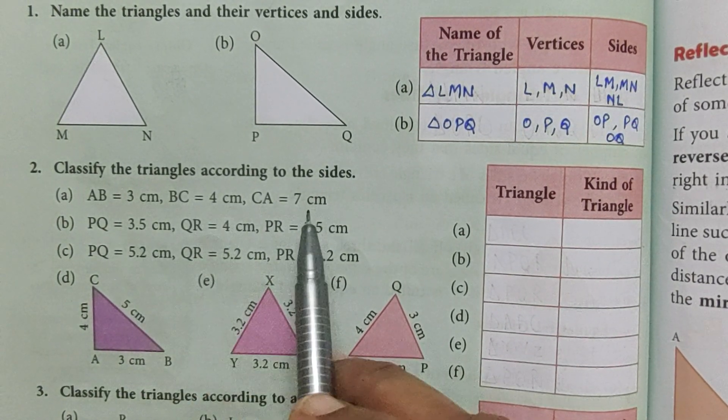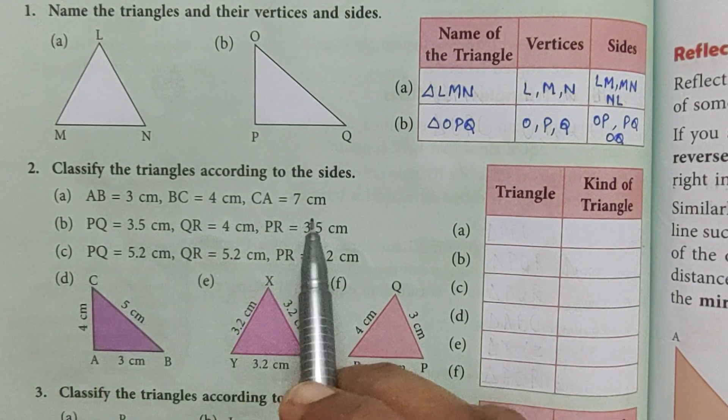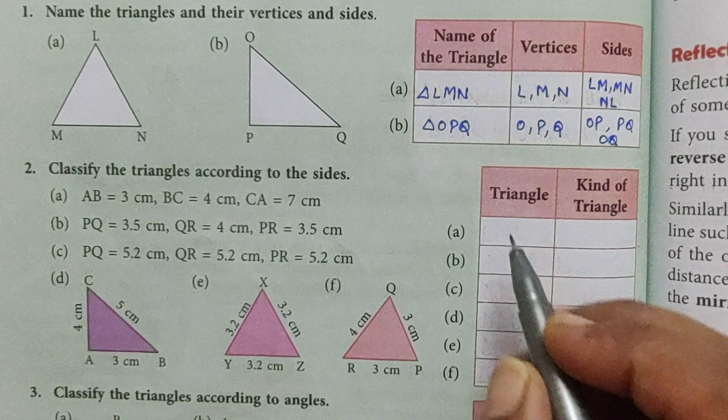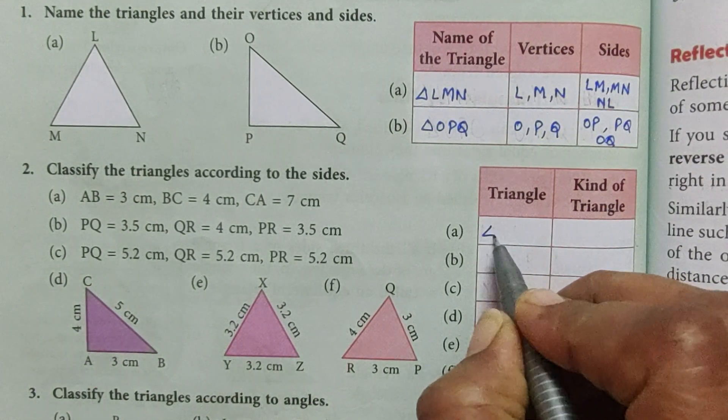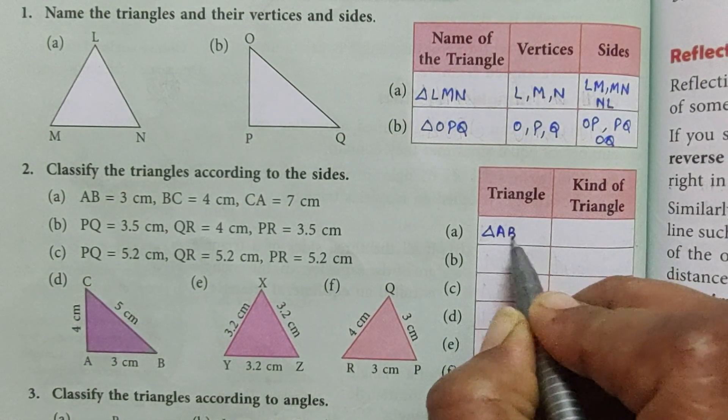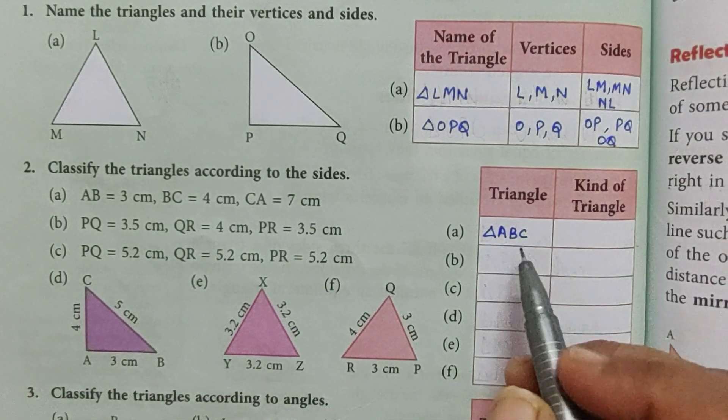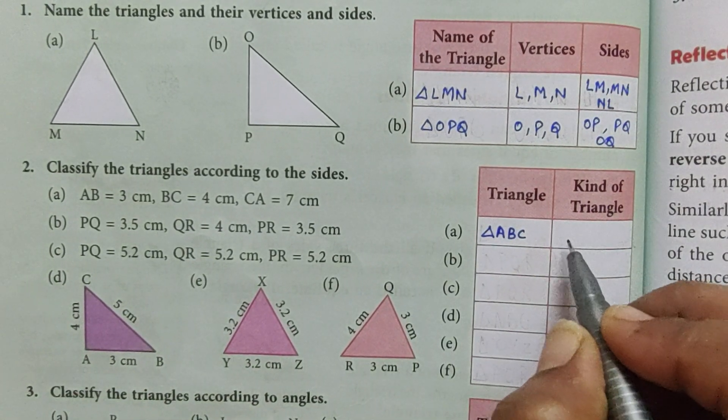The sides are 3, 4, and 7 centimeters. All the sides are of different length, so the triangle's name is triangle ABC and it is a scalene triangle.